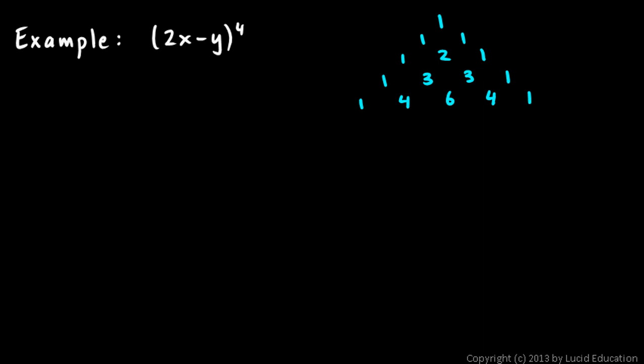So I'm just going to work this through left to right, so I'll start with the 1 here, this will equal 1, and then I have the 2x to a power of 4, and a negative y to the power of 0.